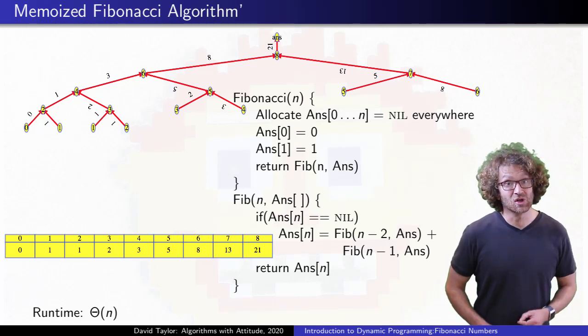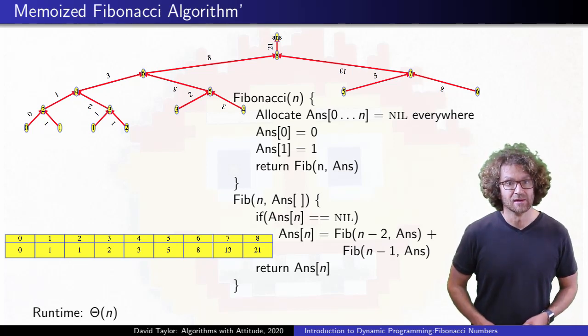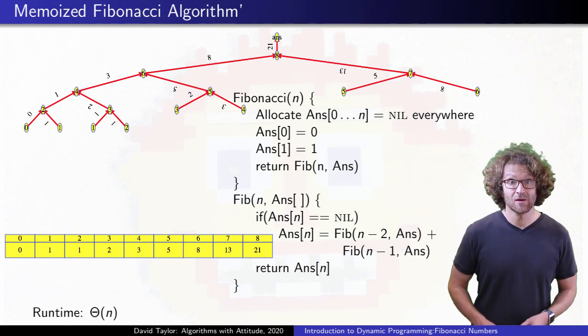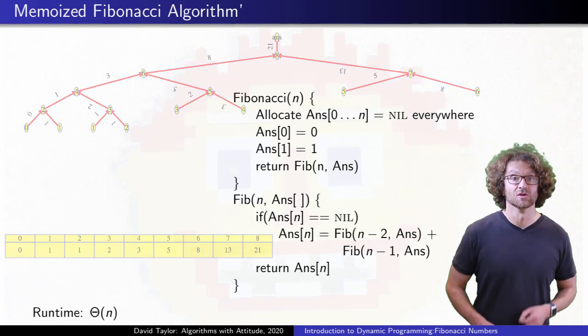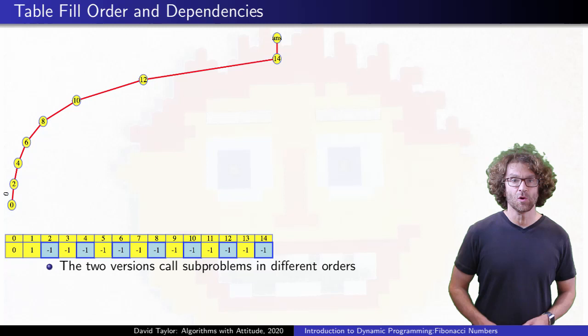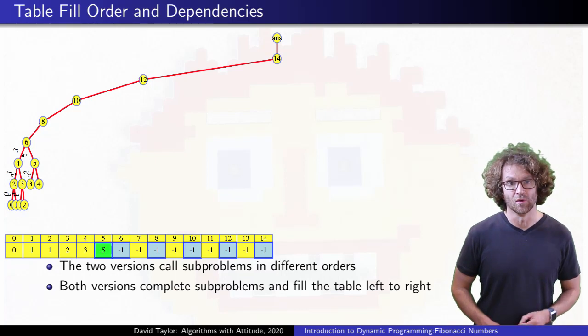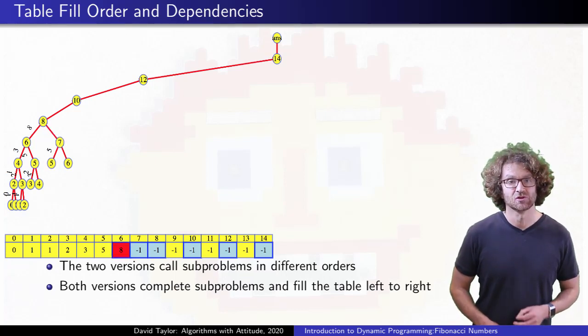We ended up with a tree that's only half as deep, but twice as wide. It has exactly the same number of nodes as the first version did, but they are arranged differently. Just due to the layout, we can call that version with a larger value and still see what's going on. I especially want to focus on the fact that the table gets filled in in exactly the same order as before, perfectly from left to right.